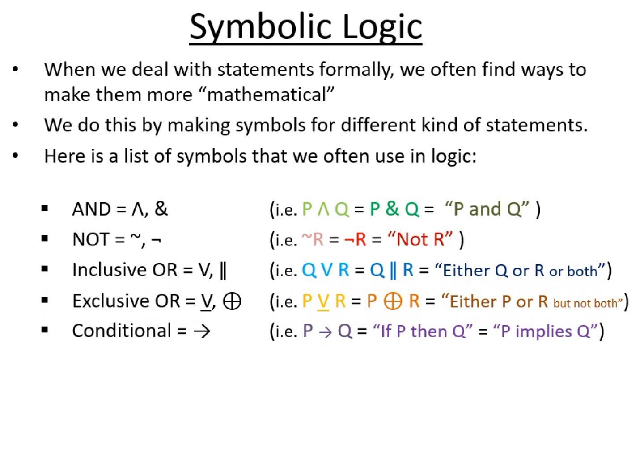From there we can move on to the conditional which is represented by an arrow pointing to the right. So P conditional Q is saying if P then Q or perhaps P implies that Q. So if P is true then the conditional relationship means that that implies that Q will also be true. It's important to note that just because we write a conditional out it doesn't automatically follow that that implication is always correct.